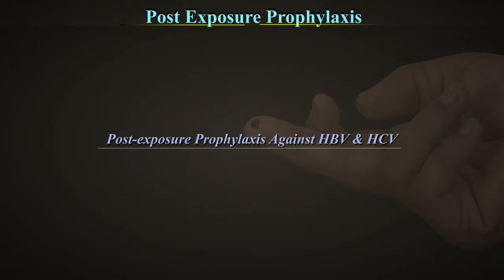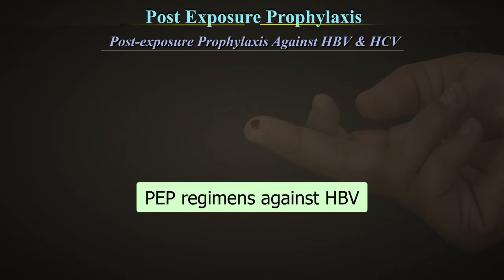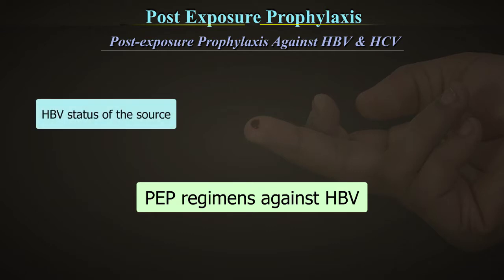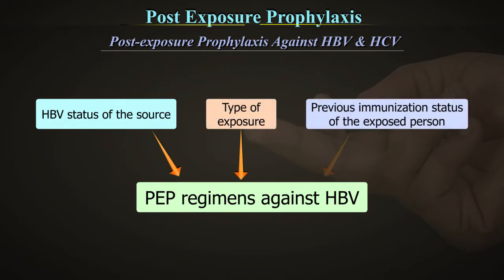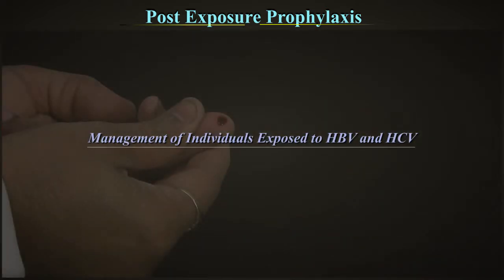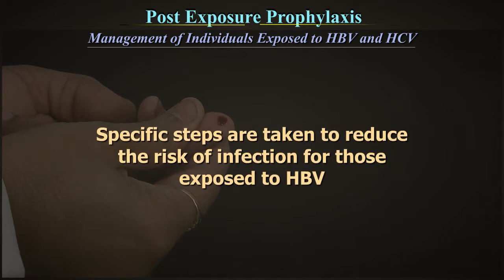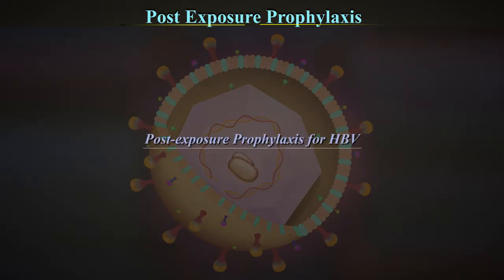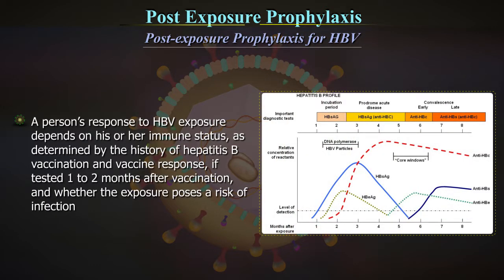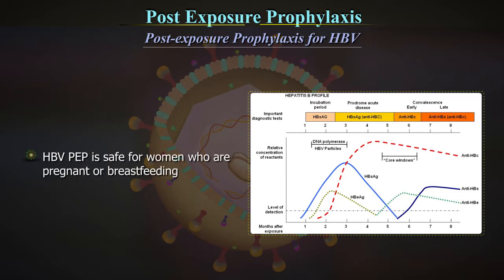Post-exposure prophylaxis against HBV and HCV: PEP regimens against HBV depend upon the HBV status of the source, type of exposure and previous immunisation status of the exposed person. There is no PEP regimen recommended for HCV; however, specific steps can be taken to reduce the risk of infection for those exposed to HBV. A person's response to HBV exposure depends on their immune status, as determined by history of Hepatitis B vaccination and vaccine response. HBV PEP is safe for women who are pregnant or breastfeeding.